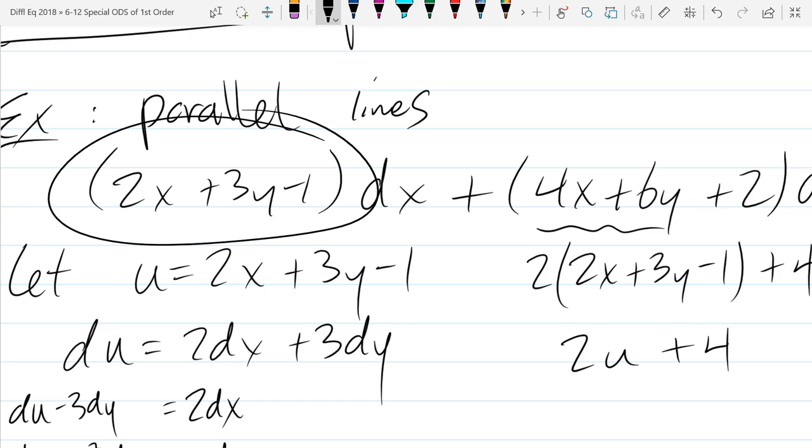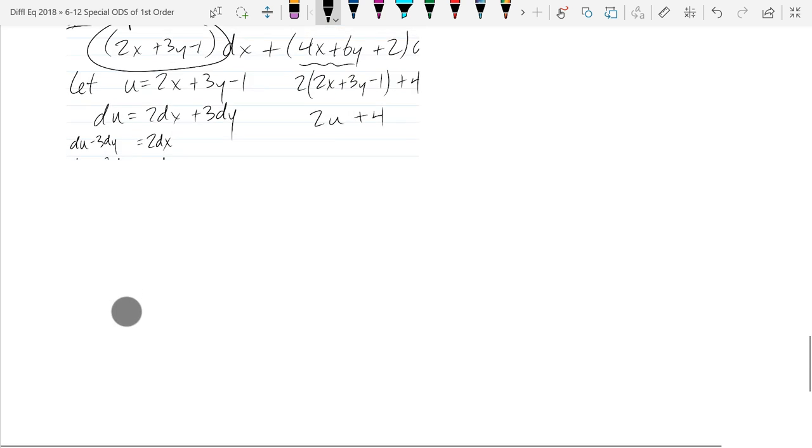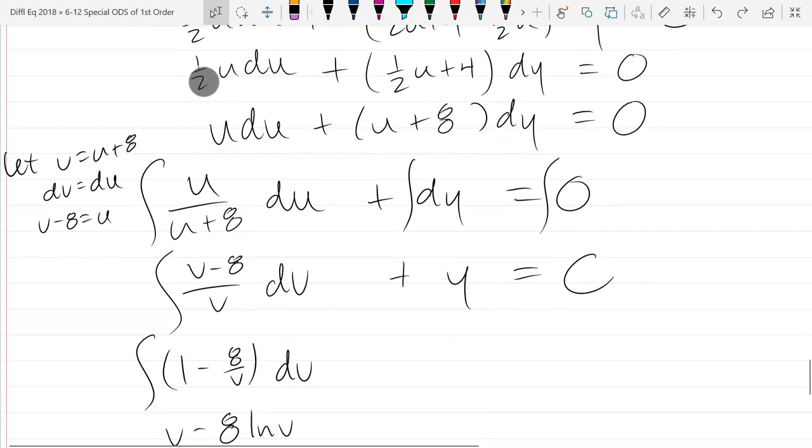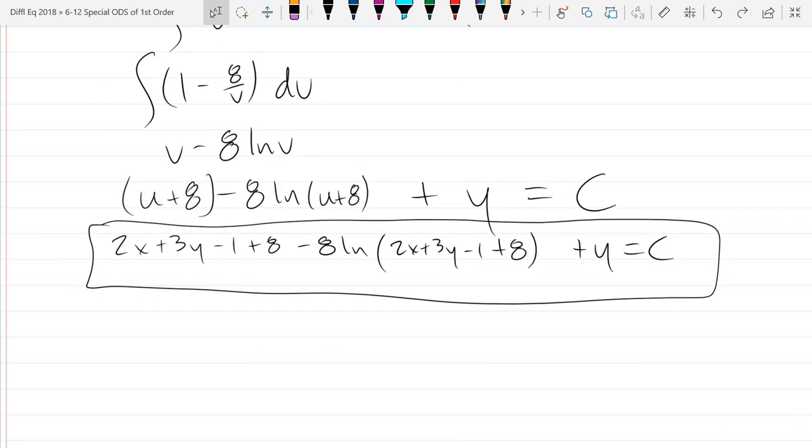We'll let u equal the first coefficient. The only difference is this one right here will be something like just 2u. It won't be 2u plus a constant. It'll just be a multiple of u. So in some sense it'll be a lot more simple.